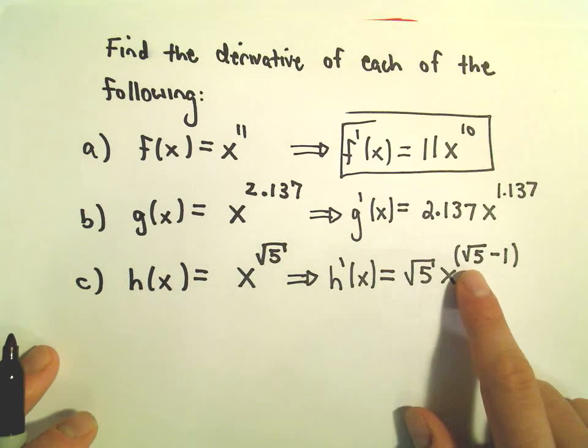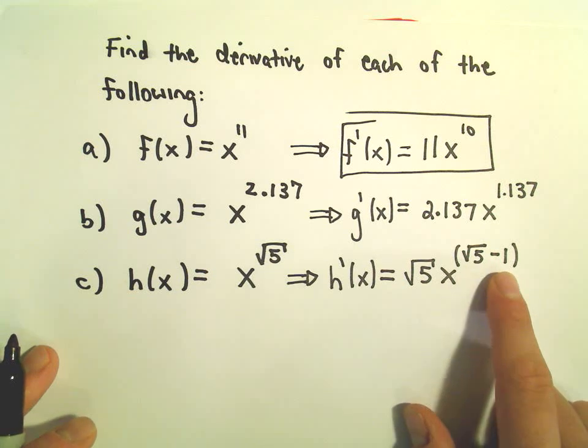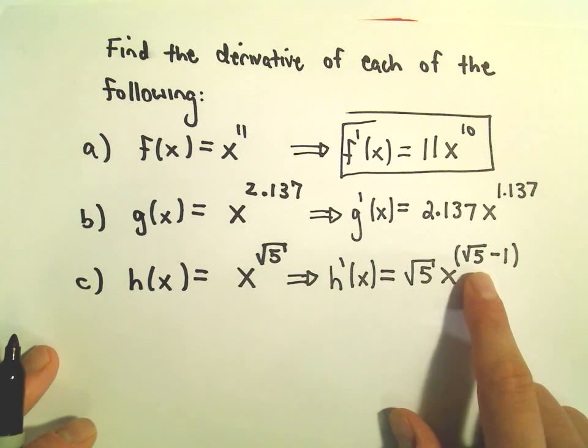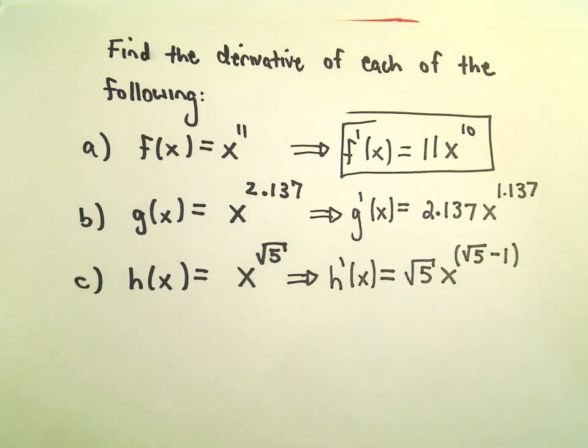You could always approximate this with a calculator. But then you're doing exactly that. You're approximating. So if you want to keep the exponent exactly like it should be, we can just write it as square root of 5 minus 1. And that's all there is to it.